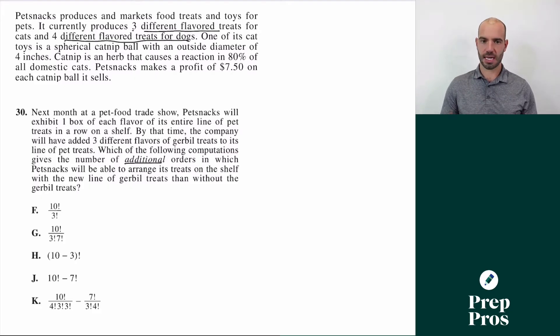There was some information from previous questions that applied to this one. It told us there were three flavors of cat and four flavors of dog treats. This question is hard for a couple of reasons. One, it has to do with organized counting. And two, the answer choices all have these exclamation points, which if you haven't heard of before, these are called factorials.